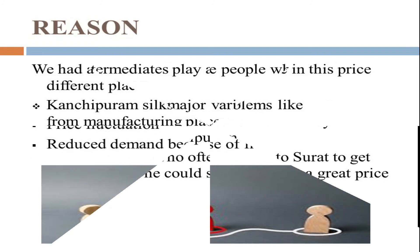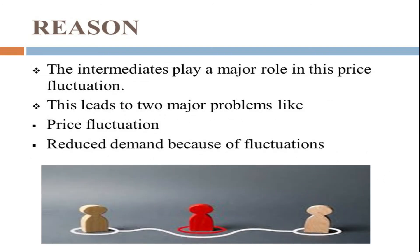The reason is that intermediaries play a major role in price fluctuation. This leads to two major problems: price fluctuation and reduced demand because of those fluctuations.